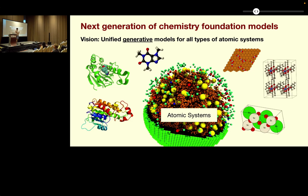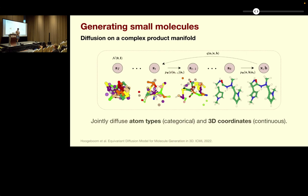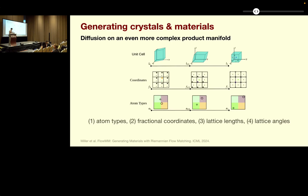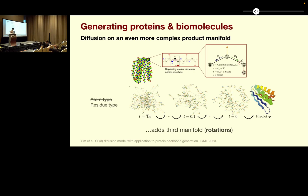Why can't we do this today? The current state of the art for generating chemical systems are diffusion models. But they're a bit mathy, a bit complex. You're generating a product manifold of categorical information as well as continuous information, and your intermediate stages of your trajectory kind of look extremely unphysical. When you start generating crystals, you start caring about periodicity and floating point values with extremely specific ranges — your losses look quite scary. And then for biomolecules, you need coarse graining. It works, but it's not unified, it's not clean, and we want to think about how we can bring all of this together.